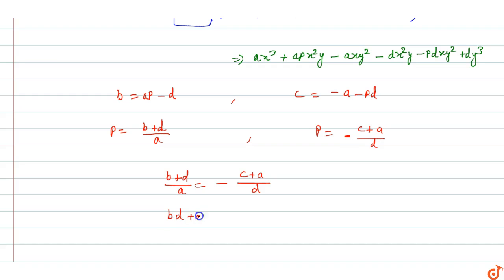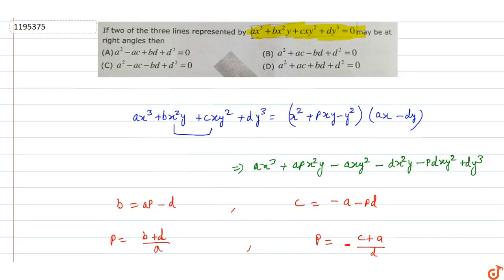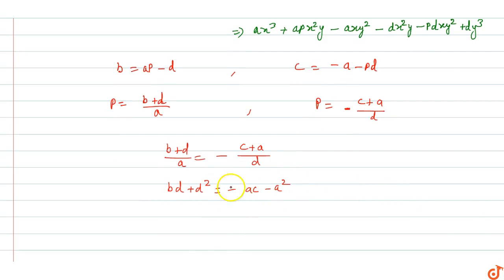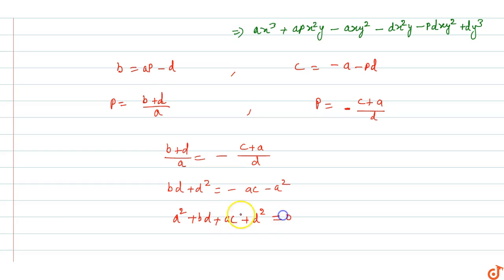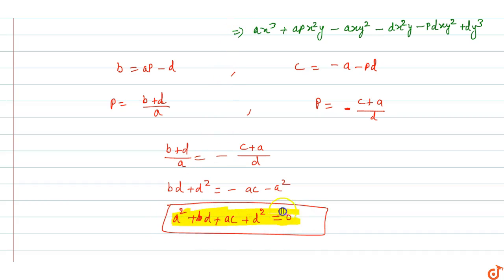Cross multiplying, we get: a times (bd + d²) equals minus ac minus a². Bringing all terms to one side, this becomes: a² + bd + ac + d² = 0, which equals zero.